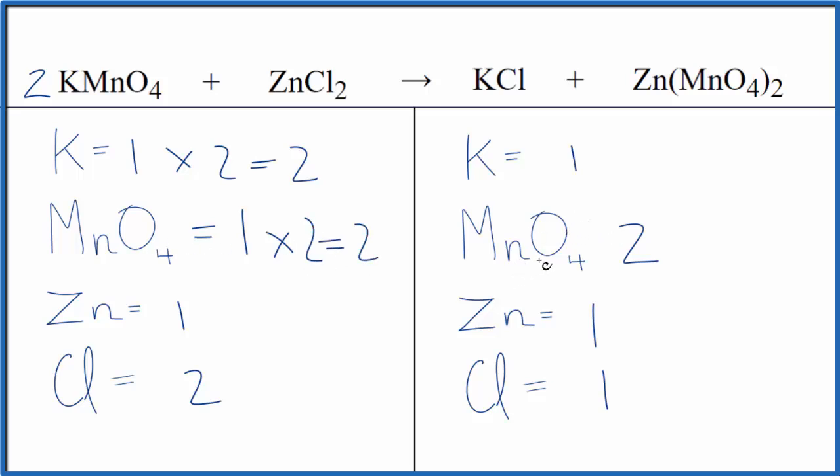Now it looks like all I need to do is put a two in front of the KCl. One times two, that gives me two of those. They're balanced. One chlorine times two, two of those. And we're done. This equation is balanced.